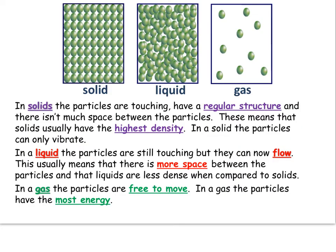In solids, the particles are touching, have a regular structure in neat rows, and there isn't much space between them. Solids usually have the highest density of all states of matter. In a solid, particles can only vibrate — they're not free to flow or move around; they're in a fixed position. In a liquid, the particles are still touching, but the bonds between them have been weakened and they're now able to flow around one another.